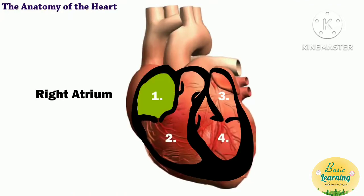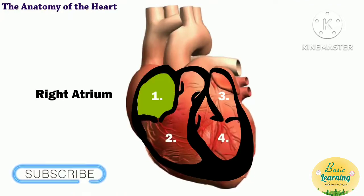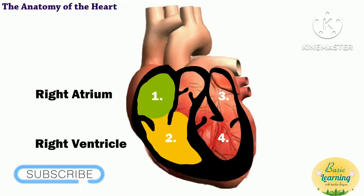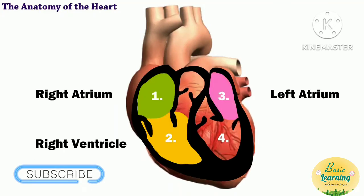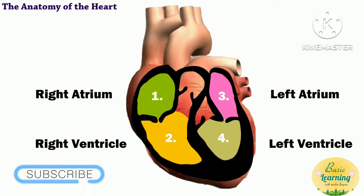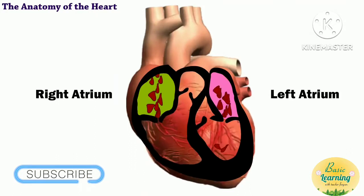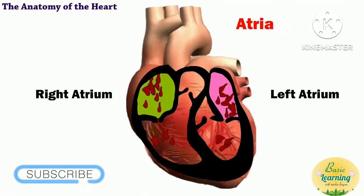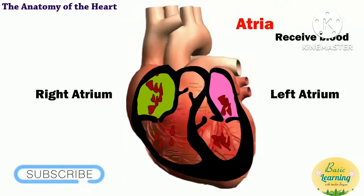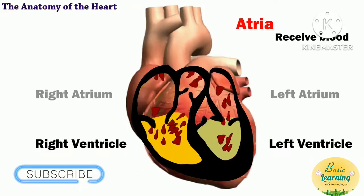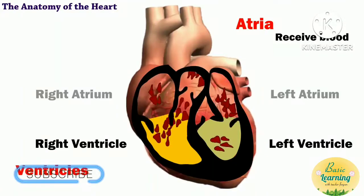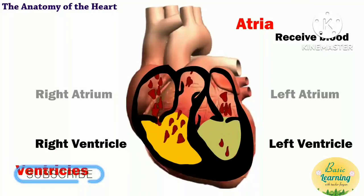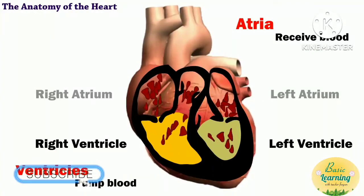Every heart has four chambers. These are the right atrium, the right ventricle, the left atrium, and the left ventricle. The two upper chambers, or atria, receive blood, while the two lower chambers, or ventricles, pump blood.